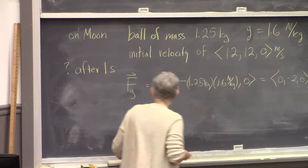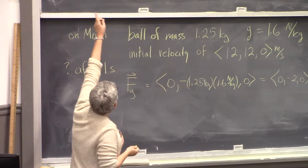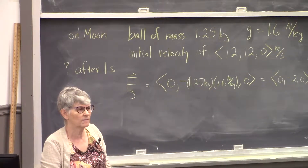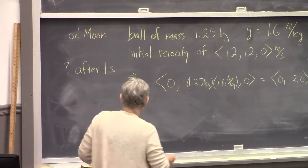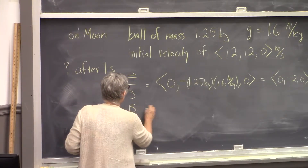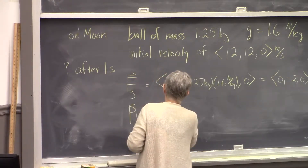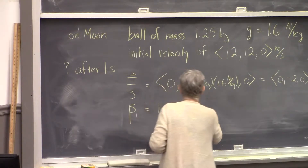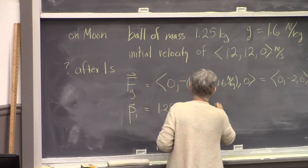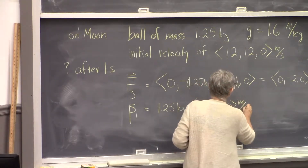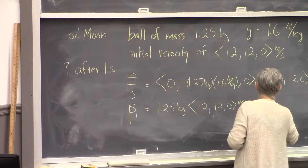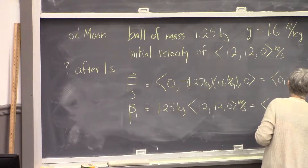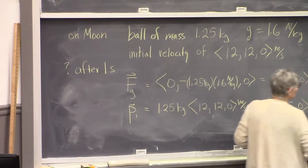Now we need to update the momentum, so we need the initial momentum of the ball. How do we calculate that? Mass times velocity. So the initial momentum of the ball is 1.25 kilograms times its velocity (12, 12, 0) meters per second, which gives us an initial momentum of (15, 15, 0) kilogram·meters per second.